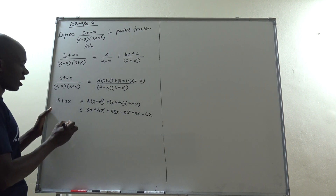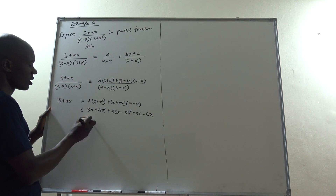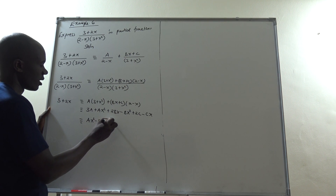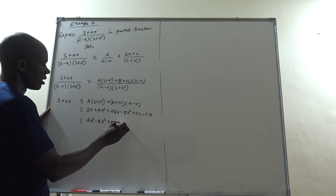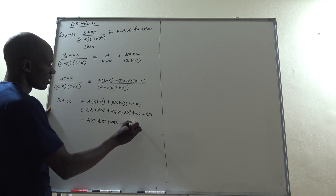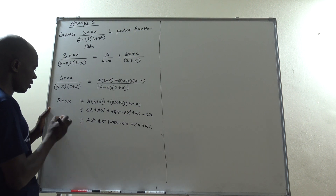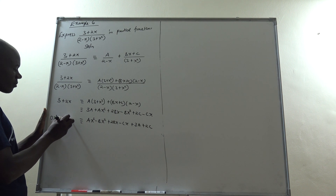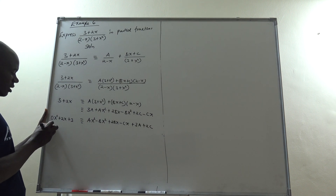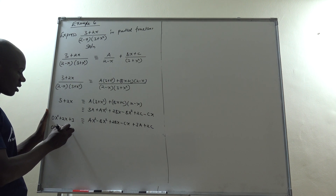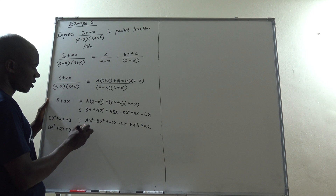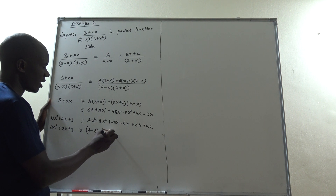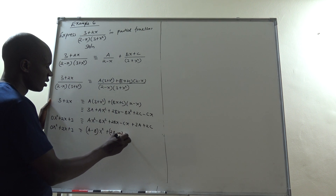Collecting terms by degree: the x² terms give (A − B)x², the x terms give (2B − C)x, and the constant terms give (3A + 2C). The left-hand side is 0x² + 2x + 3, so we have (A − B)x² + (2B − C)x + (3A + 2C) = 0x² + 2x + 3.